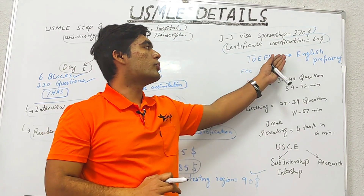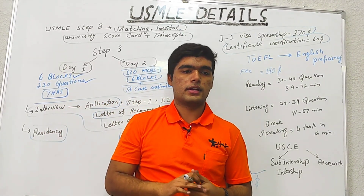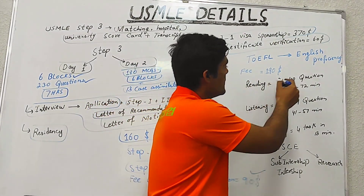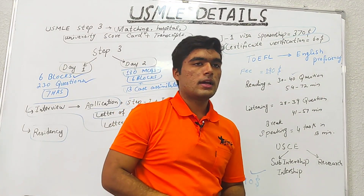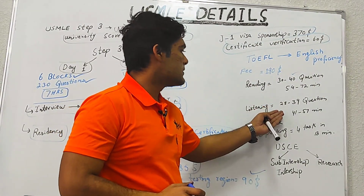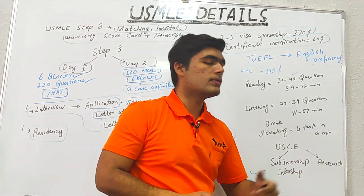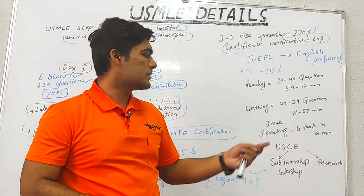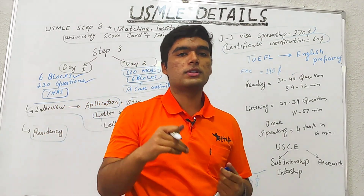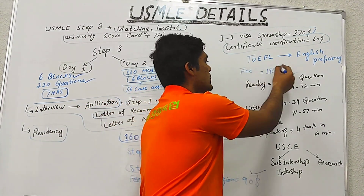The TOEFL test, which checks English proficiency, is divided into three parts. First is Reading, with 30 to 40 questions and 54 to 72 minutes allotted. Second is Listening, with 28 to 39 questions and 41 to 57 minutes. After a break comes Speaking, with 4 tasks and 13 minutes to complete. The fee for this test is $190.